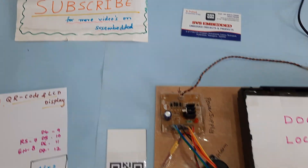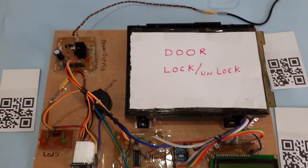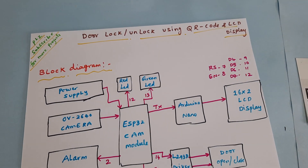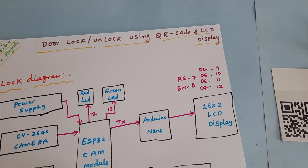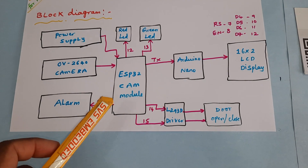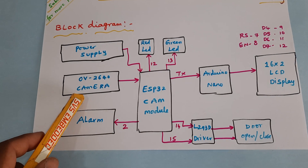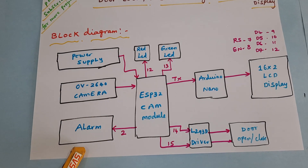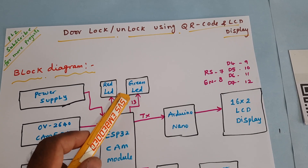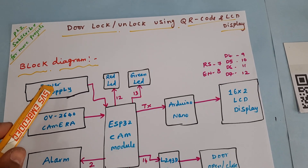Hi, we are from SVS Embedded. The project title is door lock/unlock using QR code and LCD display. Here we are using an ESP32 module, OV2640 camera module, an alarm, one red LED, one green LED, and a 5-volt power supply module.